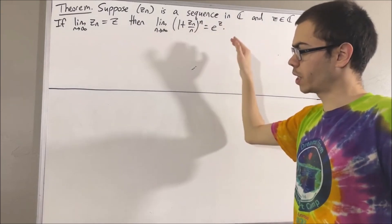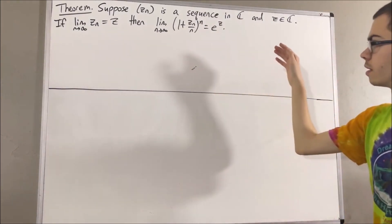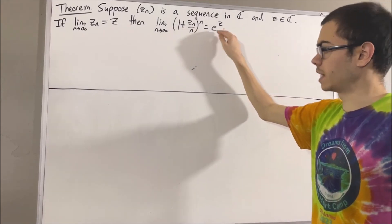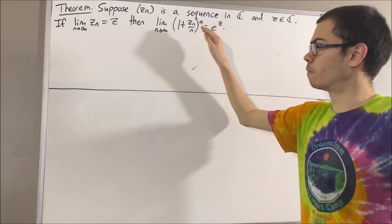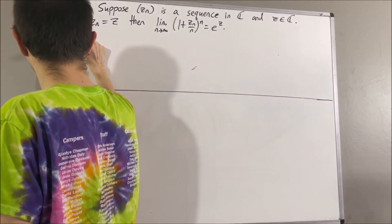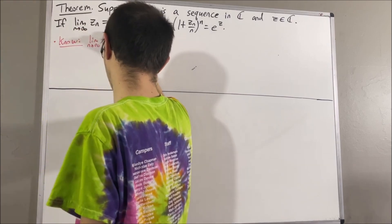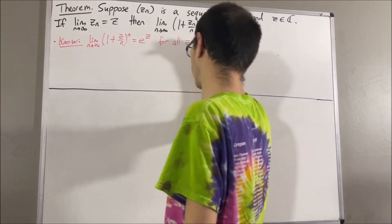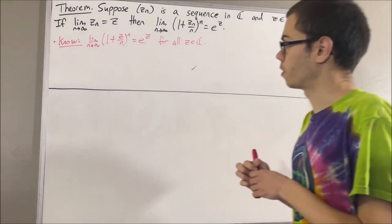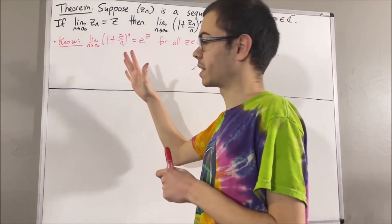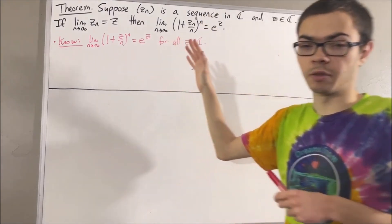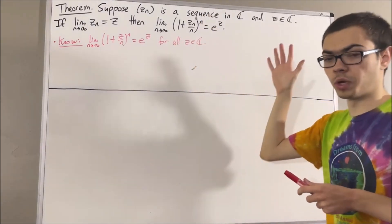Before we get into the proof, let's get some context. What is e to the z? We know that e to the z is the limit of 1 plus z over n to the power of n for all complex numbers z. Further, we have also shown that 1 plus x over n to the power of n is an increasing sequence for every real number x greater than or equal to zero.